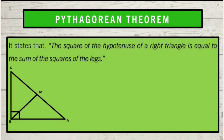The Pythagorean theorem states that the square of the hypotenuse of a right triangle is equal to the sum of the squares of the legs. Given that side CA is the hypotenuse, which is the longest side of a right triangle, and side BA and side CB are the legs. Therefore, side CA squared is equal to side BA squared plus side CB squared, or side BA squared plus side CB squared is equal to side CA squared.